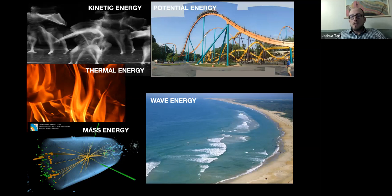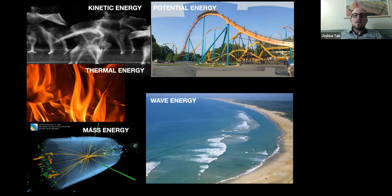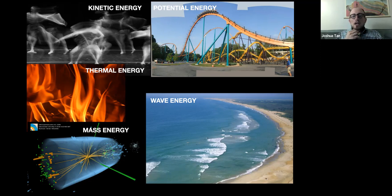Thermal energy is a different form of energy. It is related to kinetic energy, but at the scale of atoms and molecules. When atoms and molecules are moving faster, we say they have more thermal energy; when they're moving slower, less thermal energy. We'll also consider mass energy — the latest form discovered. It is a form of energy associated with matter itself. Famously, Albert Einstein discovered that E equals mc squared: energy is equal to mass times the speed of light squared. This form of energy wasn't understood until Einstein began his work on relativity. In some ways, it's the largest reserve of energy that exists, but it's very hard to access.